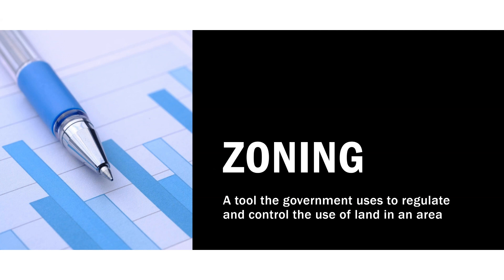Z is for zoning. Zoning is a tool the government uses to regulate the use of land and also to limit the amount of businesses in a certain area. For example, in some municipalities they won't allow you to open another hair salon within a certain distance from one that's already there — that's zoning. Zoning also regulates things like how close a house can be to the sidewalk, how high you can build, and what type of structure you can build — commercial, residential, or manufacturing. The land is zoned for a certain use and you must comply with that zoning ordinance.